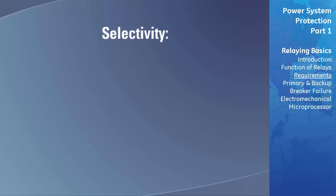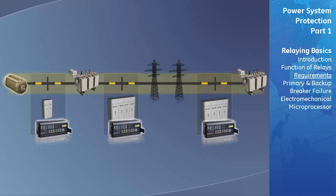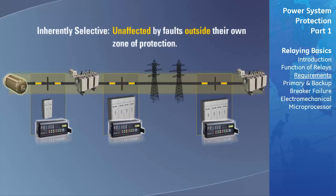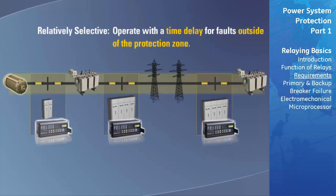The selectivity of a protective relay is its ability to trip the minimum number of circuit breakers to clear a fault. The relay must be able to select faults in its own zone of protection and ignore faults in adjoining zones. Some relaying schemes are inherently selective, that is, they are unaffected by faults outside of their own zone. Other types of relaying, which operate with a time delay for faults outside of the protected zone, are said to be relatively selective.